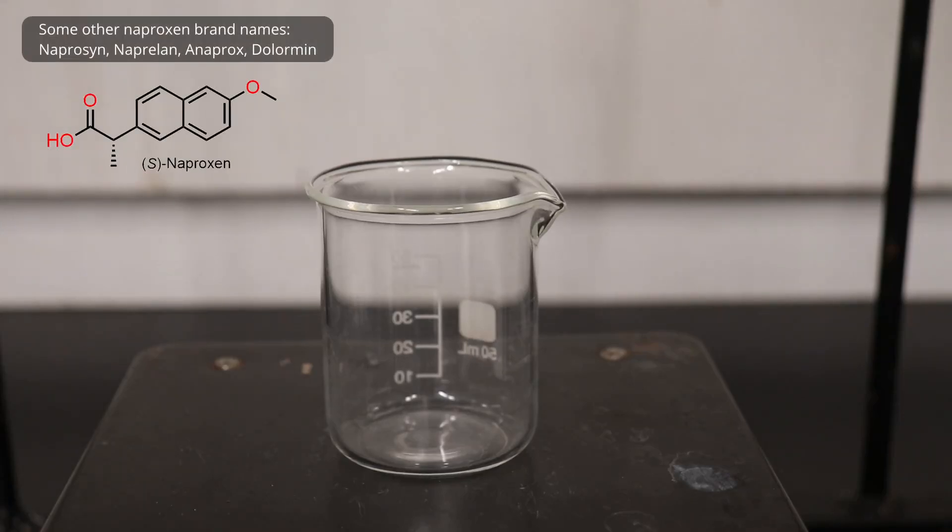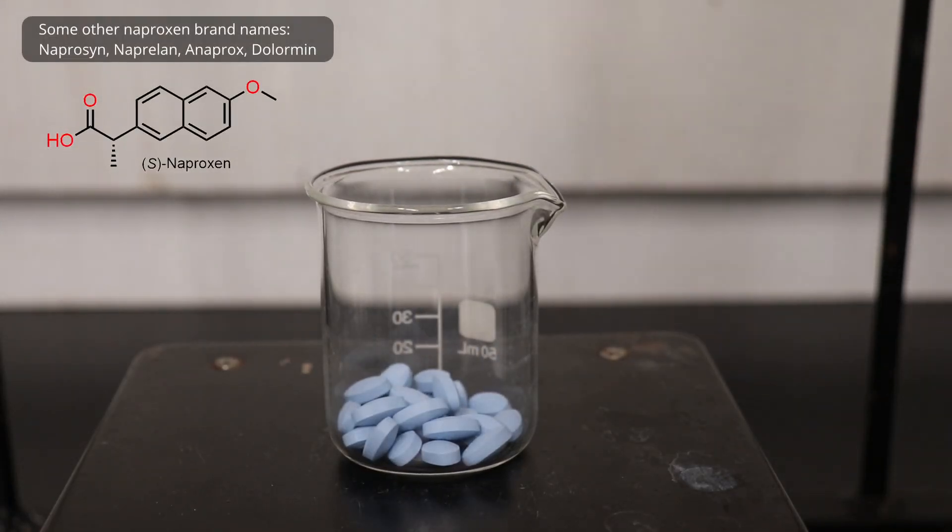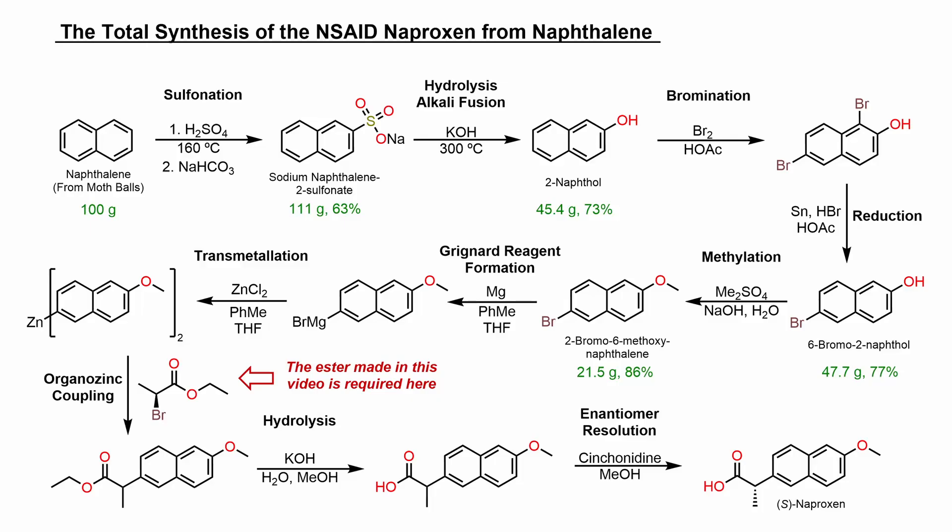The reason for me making this compound in particular is that I need it for my total synthesis series on the non-steroidal anti-inflammatory compound naproxen, where this ester is going to be used to install the propionic acid side chain via an organozinc coupling reaction with 2-bromo-6-methoxynaphthalene,